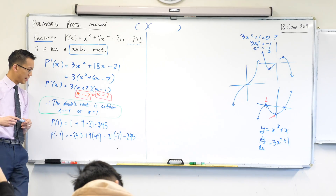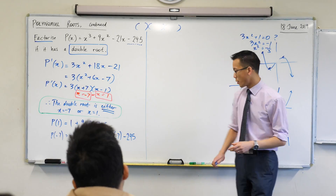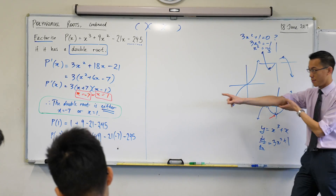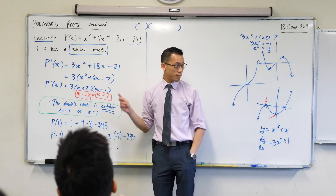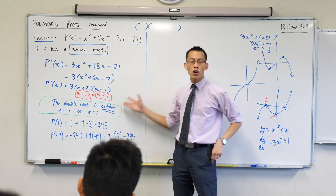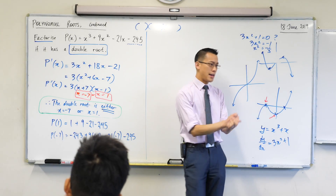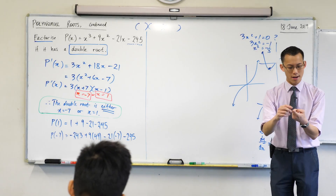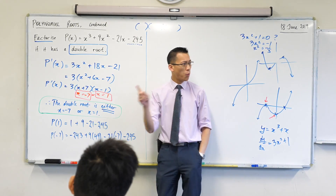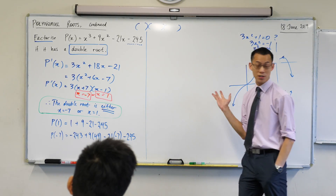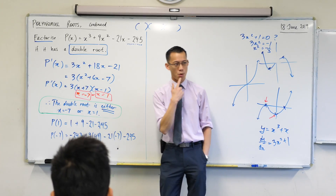A student astutely asked: why is it 'either' x = −7 or x = 1 for the double root, rather than 'and'? Could both be double roots? Well, there are two options: either or and. It could theoretically be both — but why can we rule that out from the original question?